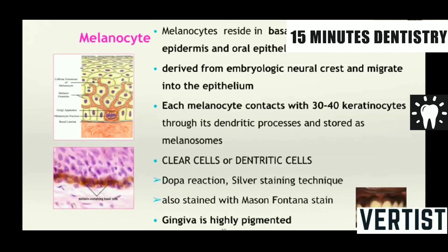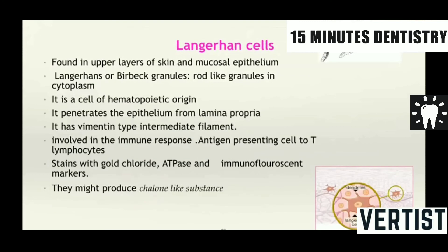What are melanocytes? These are cells which elaborate melanin. They are basically from the neural crests and migrate into the epithelium. And they are in contact with 30 to 40 keratinocytes through the dendritic processes. And where the melanin is stored is in the melanosomes. They are clear cells or dendritic cells. They can be stained by special staining like silver staining and Masson-Fontana stain. In the gingiva, they are highly pigmented.